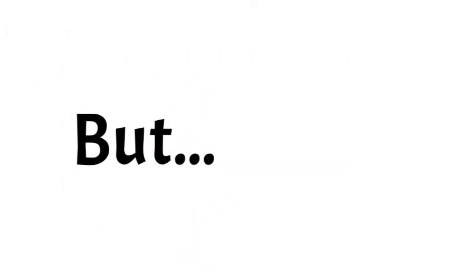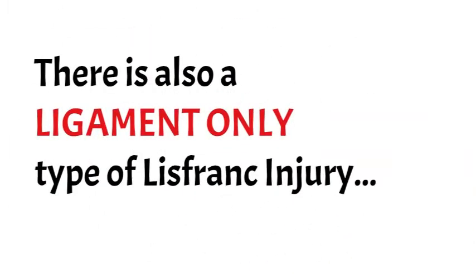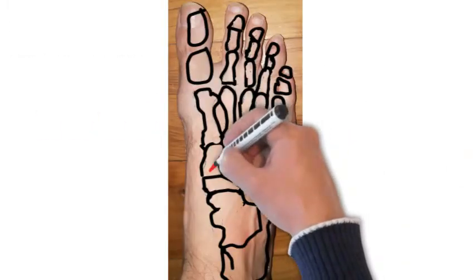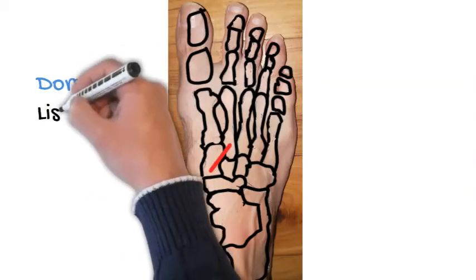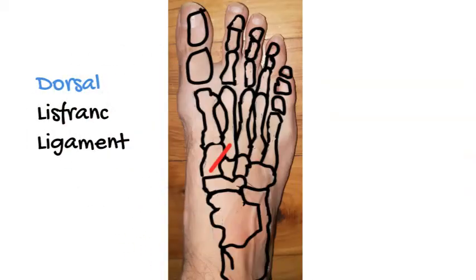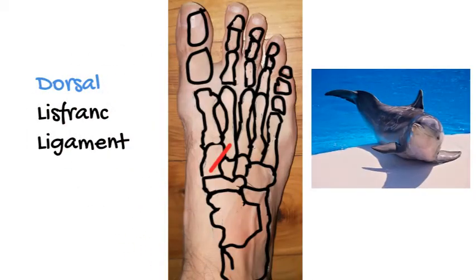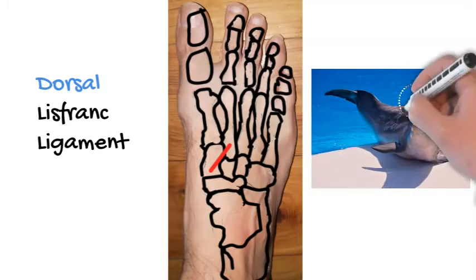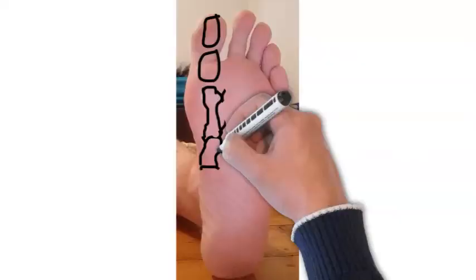But there is also, apart from that chip-off bone injury that we saw on the previous slide, there's also a ligament-only injury where the rope busts on its own. Now to explain that, there is actually a few components to that ligament. So there's what's called a dorsal Lisfranc ligament, which means there's part of the ligament that's on the top of the foot, just like a dorsal fin you'd find on a dolphin which sits on top.